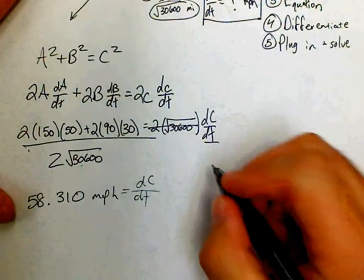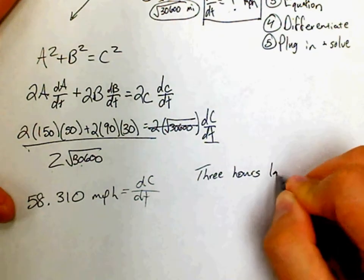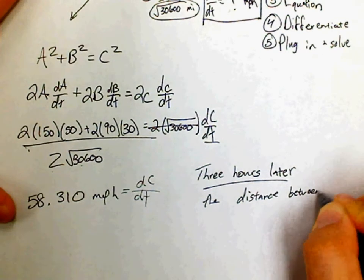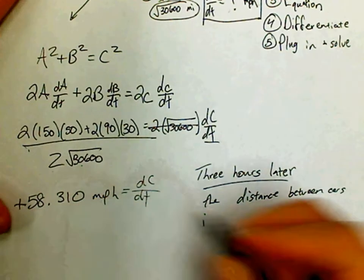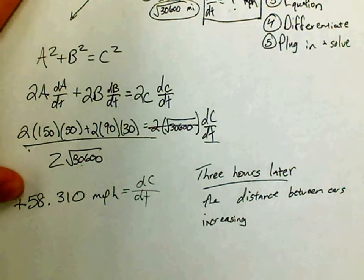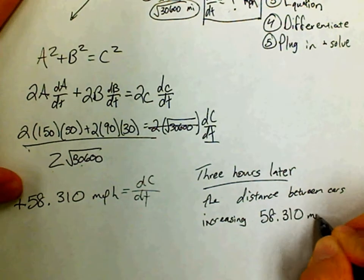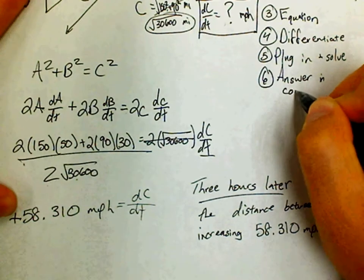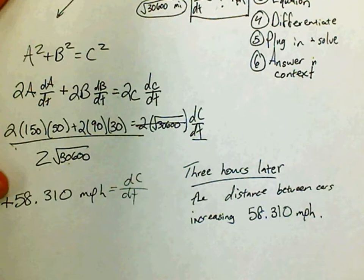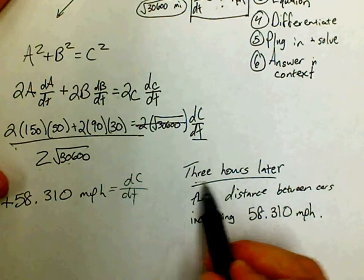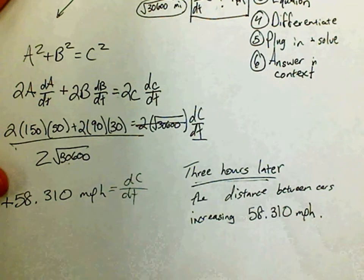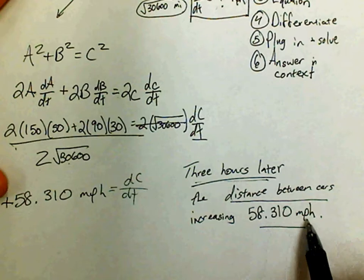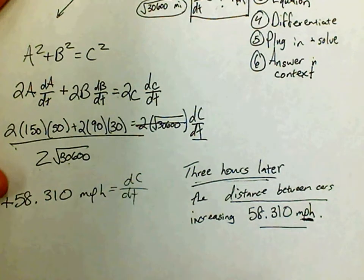Now let's interpret it. Three hours later — that was the time given — the distance between the cars is increasing at 58.310 miles per hour. The positive value confirms it's increasing; a negative value would mean decreasing. You need to answer in context: tell me when, tell me what is changing, and tell me by how much with units.